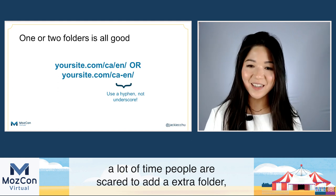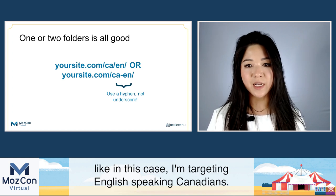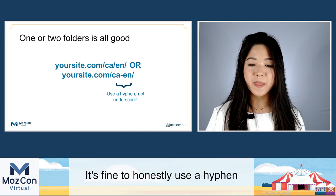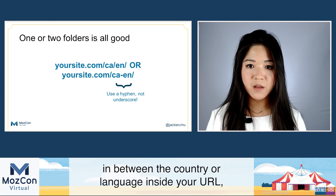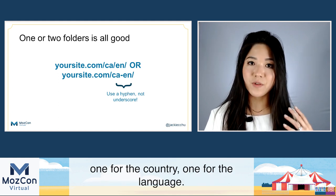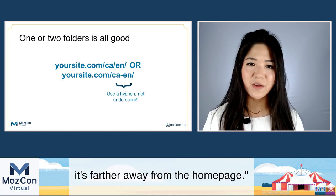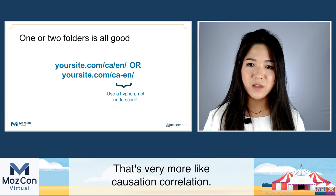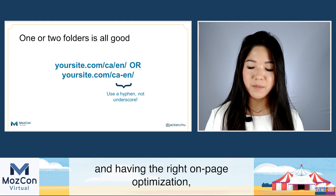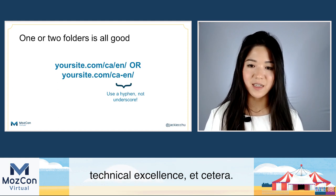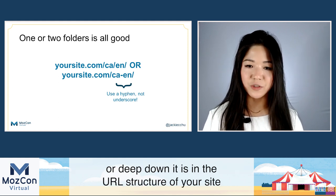One or two folders — it's all good. A lot of times people are scared to add an extra folder. For example, targeting English-speaking Canadians, it's fine to use a hyphen between country and language or to have two folders — one for country, one for language. People get scared thinking that if they add the folder, it's farther from the homepage. That's more causation-correlation. The most important thing is internal links, the right on-page optimization, and technical excellence. How many folders deep something is in the URL structure is not a real consideration.